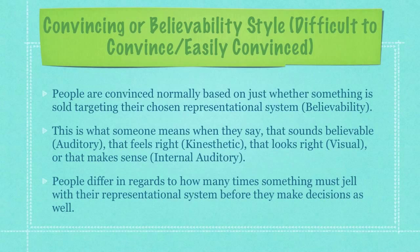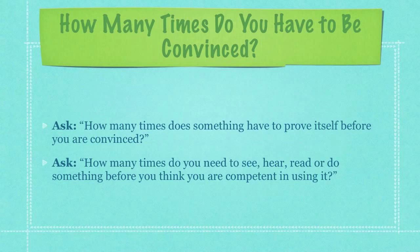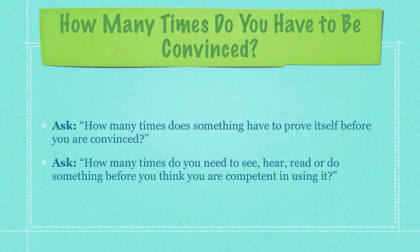People differ in how many times something must gel with their representational system before they make decisions. Most people make decisions based off of visuals — they make up 50-75% of the population. 15-35% are sound-right type people who think in what they have been told in the past. 12-15% of people are feeling-type people. 8-10% of people assume something will be right for them — these are the easy sales. 50% of people can be persuaded to believe anything if you present believable information in their chosen representational system enough times. 25% of society make decisions based on their own personal time requirements — once they feel they have thought about something long enough, they make a decision. If someone says they'll get back to you in three months, contact them in three weeks and reference that it feels like three months; they will probably agree and then make a decision.